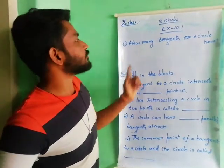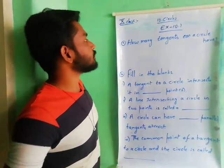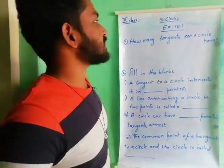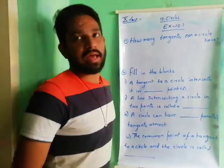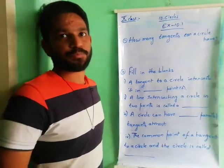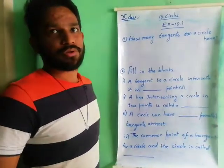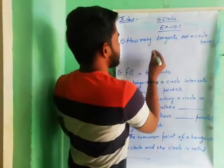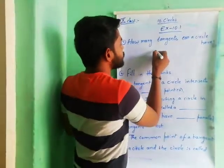Coming to the first question: how many tangents can a circle have?